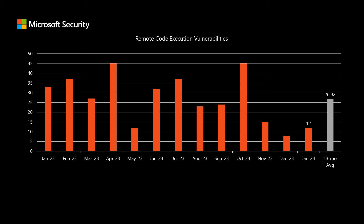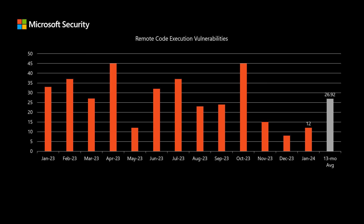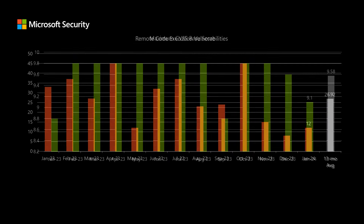For example, with remote code execution vulnerabilities — these are the ones that typically provide the most risk, as they would allow a threat actor to install malicious software — we've been averaging just under 27 of these per month. This month, there are 12 remote code execution vulnerabilities in today's release.